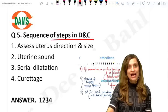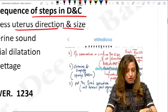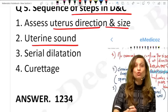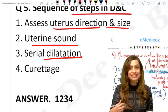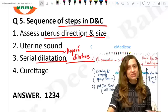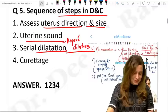Next, arrange the steps of dilatation and curettage in sequence. First, assess the uterus direction and size via PV examination. Then clean, drape, and insert the speculum. Next, use the uterine sound — which also acts as the first dilator and confirms uterine direction. Then do serial dilatation with Hegar's dilators, followed by curettage. That is the correct order: one, two, three, four.